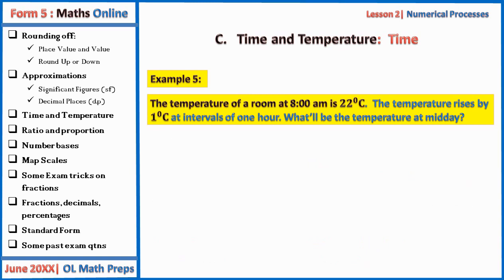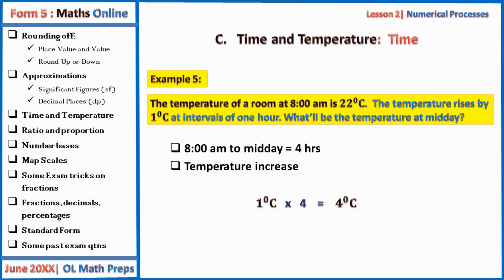Example five on temperature: the temperature of a room at 8 am is 22 degrees Celsius, and the temperature rises by one degree Celsius every hour. What will be the temperature at midday? From 8 am to midday is four hours. Each hour corresponds to a rise of one degree Celsius, so four hours corresponds to a rise of four degrees Celsius.